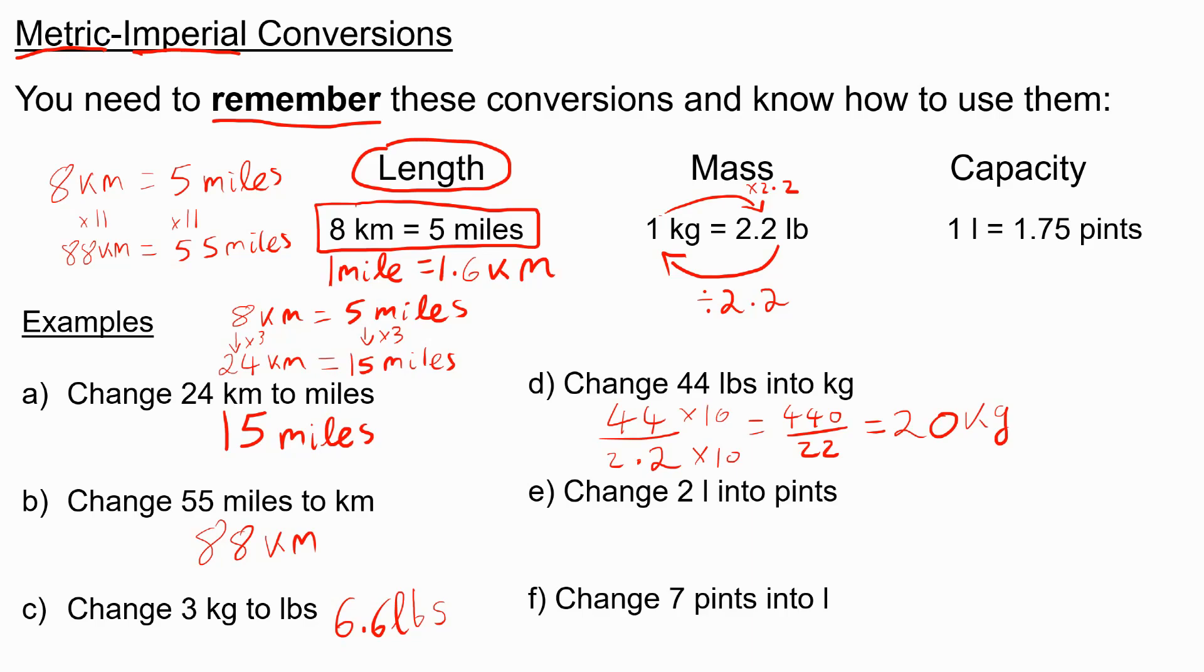Finally, if I want to change between liters and pints, two liters into pints, well, one liter is 1.75 pints. So to go from liters to pints, you times by 1.75. So I would need to do 2 times 1.75.